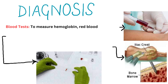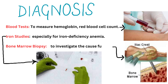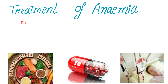If you suspect anemia, it is essential to seek medical advice. Diagnosis typically involves a blood test to measure hemoglobin, RBC count, and other parameters. The second is iron studies, to determine the cause especially for iron deficiency anemia. The third test is bone marrow biopsy, used in some cases to investigate the cause further.